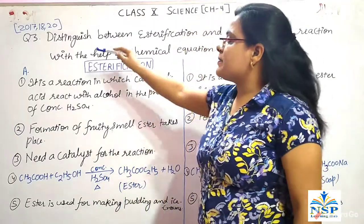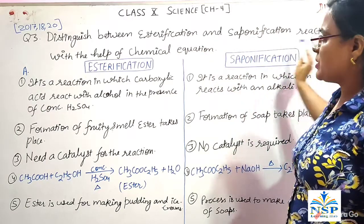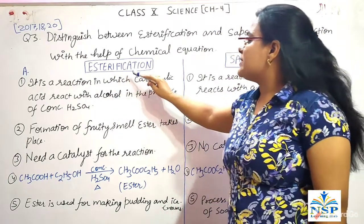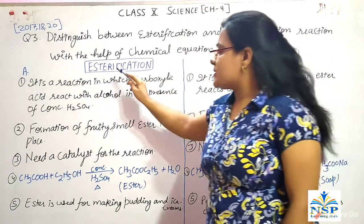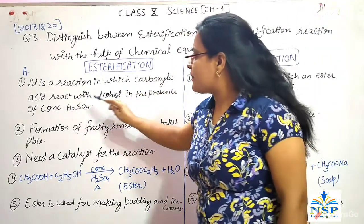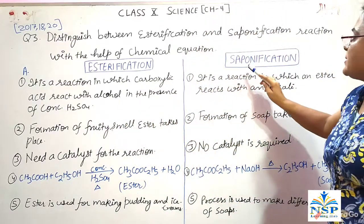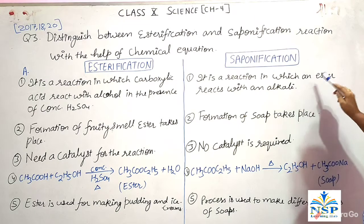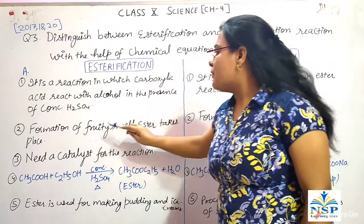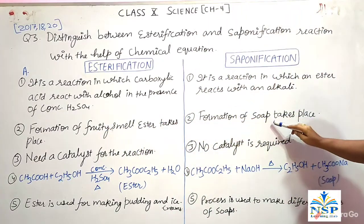Our next important question is: Distinguish between esterification and saponification reaction with the help of chemical equations. Esterification is a reaction in which carboxylic acid reacts with alcohol in the presence of concentrated H2SO4. In saponification, it is a reaction in which an ester reacts with an alkali. In esterification, formation of a fruity-smelling ester takes place. In saponification, formation of soap takes place.